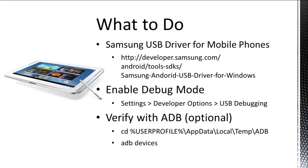The third step is using the Android Debug Bridge, which is an optional step. You can use this to verify that the Android Debug Bridge is able to communicate with your device, and in this way you'll be able to verify that the communication protocols are working. In the event that something isn't going right, you can do some troubleshooting using this tool as well. As I mentioned, it's completely optional — you don't need to do this, but I'll show you how anyway.